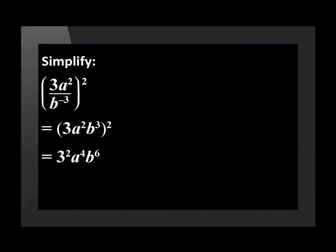We then raise the a squared and b cubed to the power of 2 and get a to the power of 4 multiplied by b to the power of 6. We can simplify this to give us 9a to the power of 4, b to the power of 6.